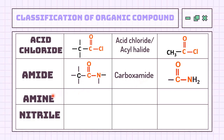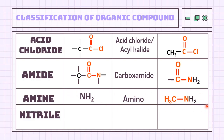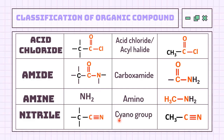Then we have the amine compound. The amine compound has an amino group, which is basically just NH2 attached to the carbon chain. You will be learning about this compound more thoroughly in Chapter 11, Amines and its Derivatives. And lastly, nitrile compound, where it has a cyano group, represented by a carbon triple bond nitrogen (C≡N).